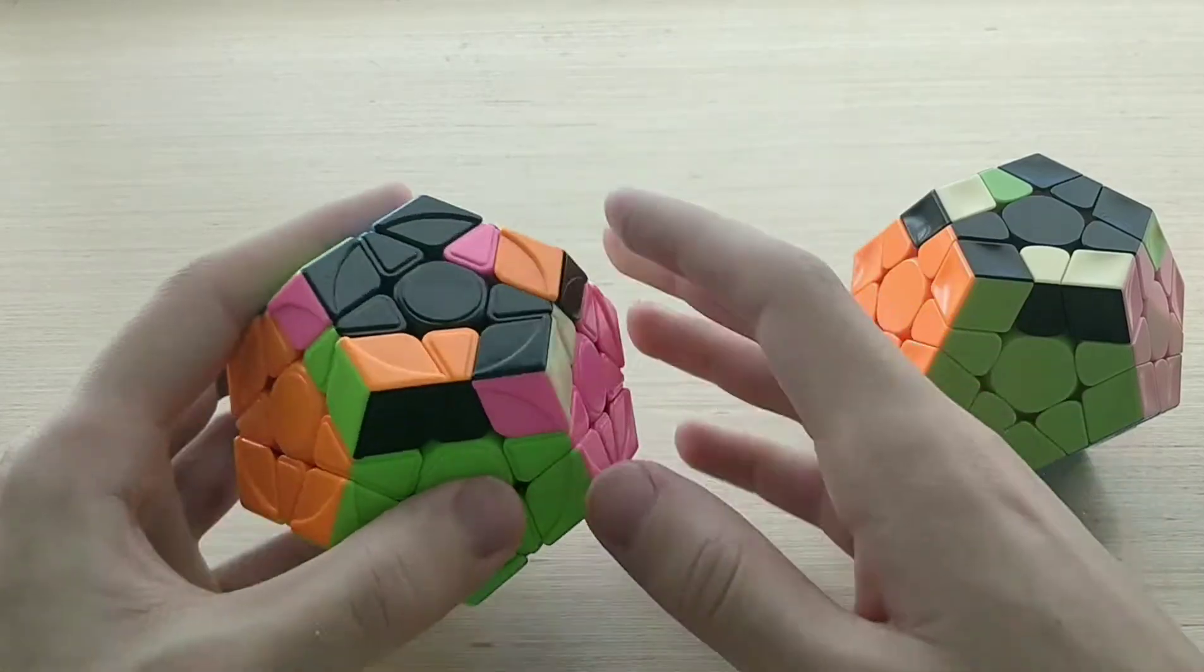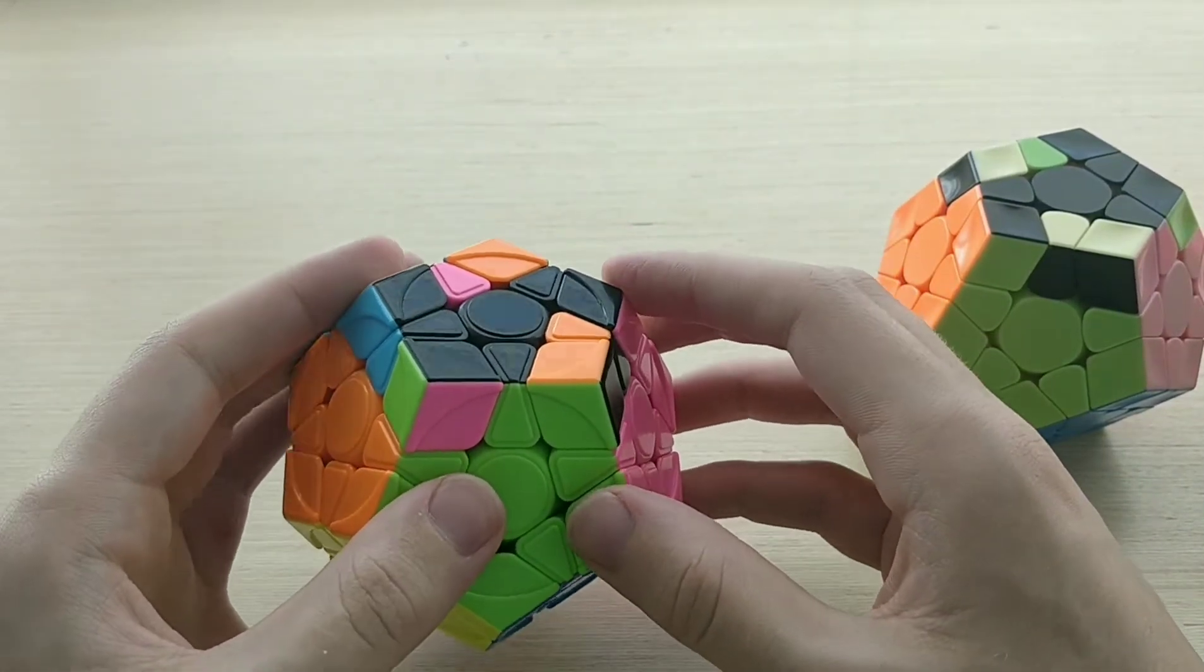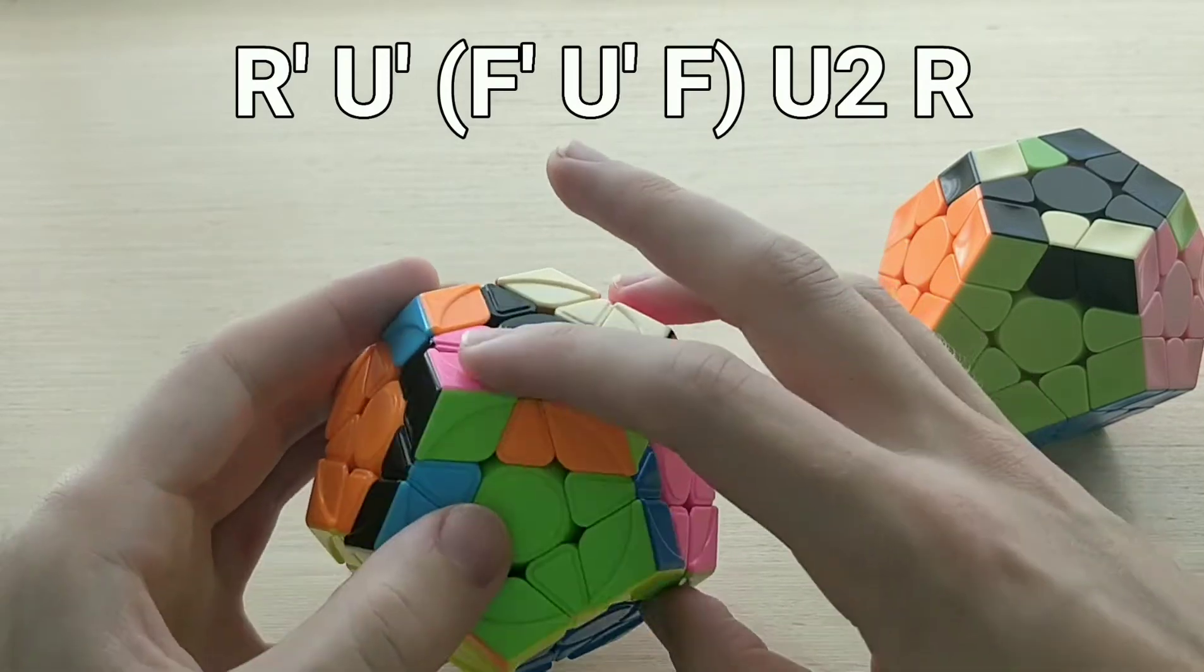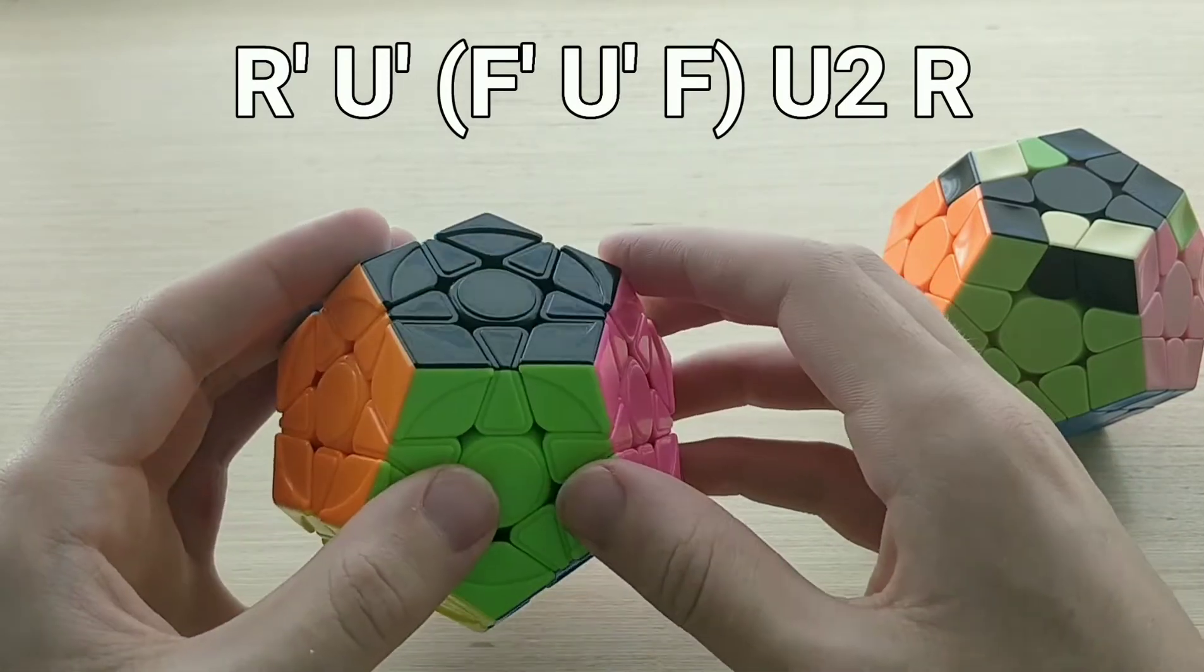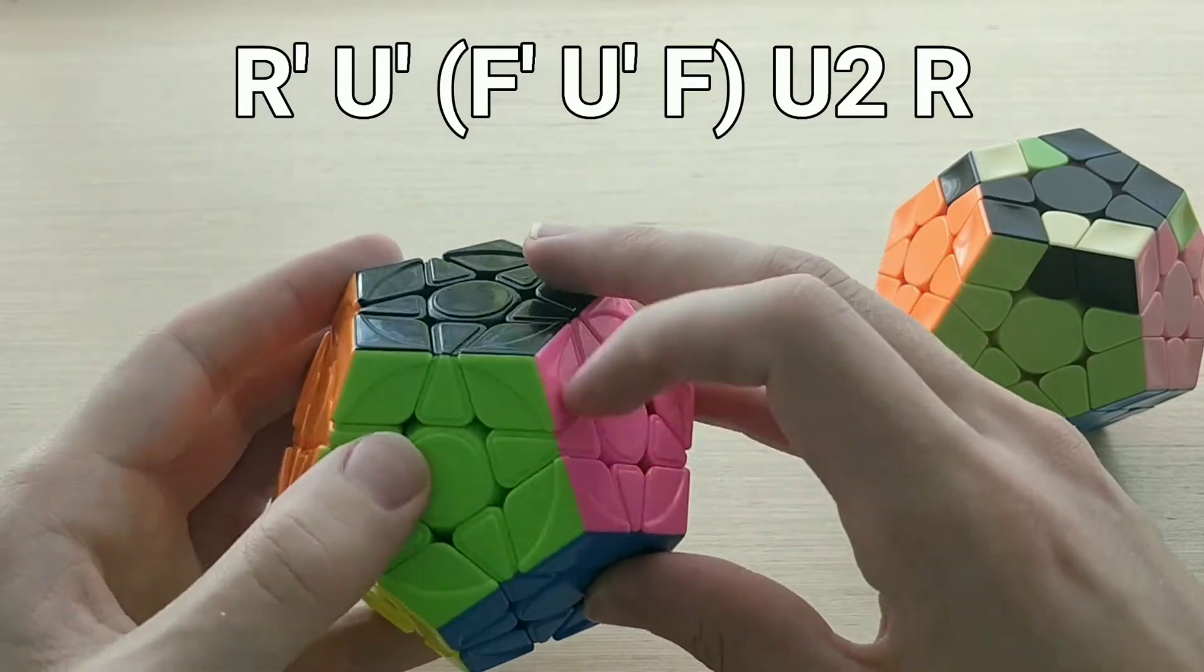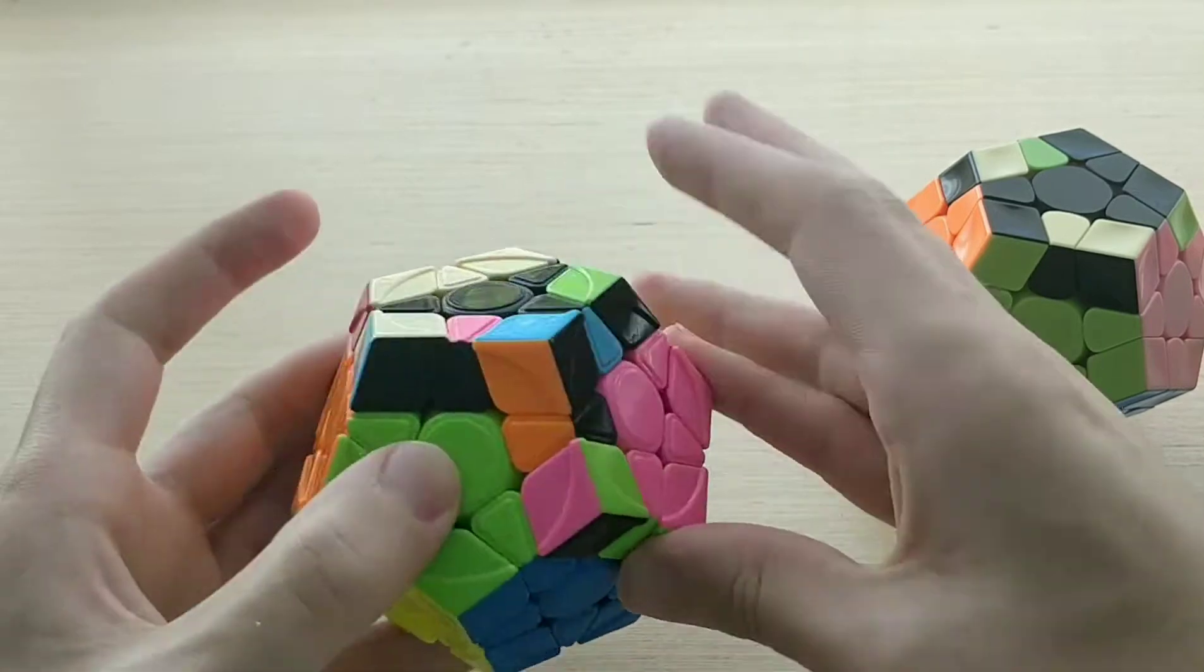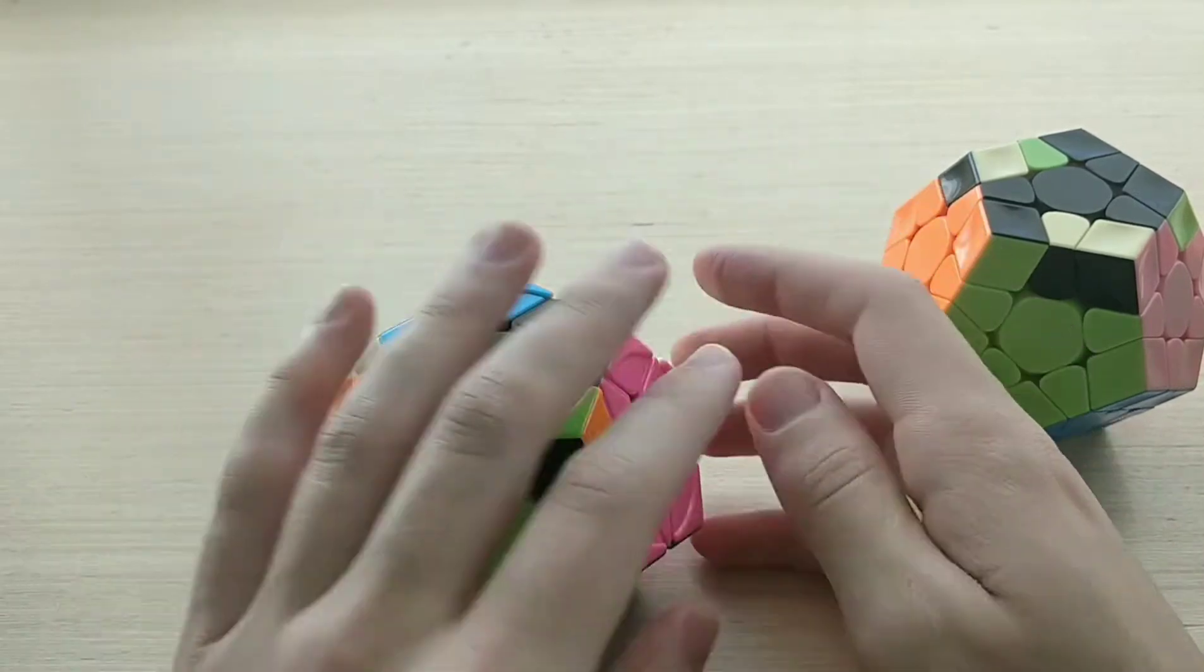For 9b plus here, we're going to do this algorithm, which is very short. r' u' f, f' u' f, u2 r. So it's just this sort of push f', I guess is the only really unique finger trick there. Other than that, very straightforward.